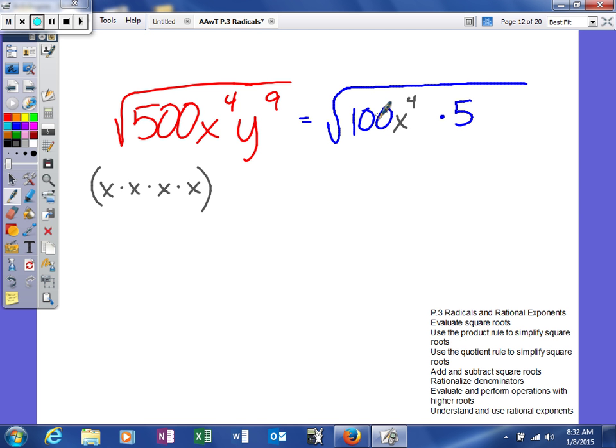And an easy way to do this whenever you're dealing with variables is you're going to take your index, which as we said is assumed 2, and divide it into the exponent. If it goes into it evenly, then it's a perfect root. So for instance, looking at our y's, what we actually have is, will 2 go into 9 evenly? And that answer is no.